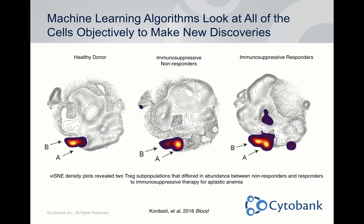Here's an example: Sharam Kordosti and his group at King's College in London used VISNEE to help them look at complex data. On the left, healthy donors — gray dots are T cells, colored dots are Treg cells. In healthy donors, Tregs localized to region B, indicating the same phenotype. Immunosuppressive non-responders showed Tregs in region A (slightly different phenotype). Responders had more of a B phenotype — looking more like healthy Tregs. These very small changes were detectable using VISNEE where looking at two parameters at a time would have been difficult.